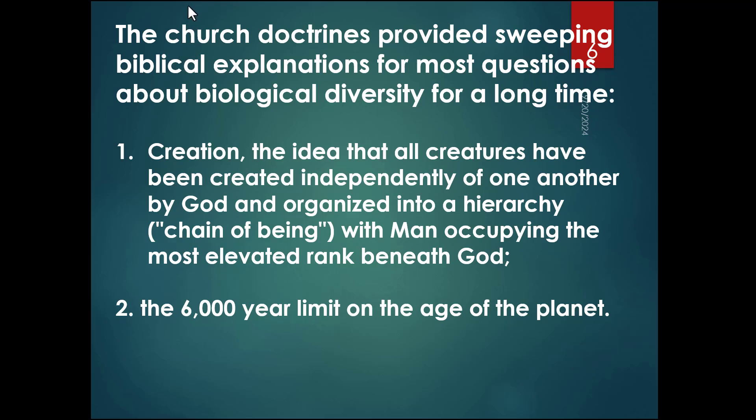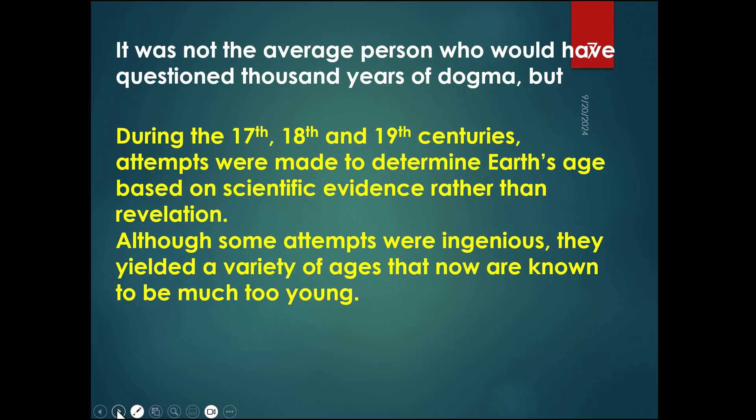His calculation provided a sweeping biblical explanation for most questions about biological diversity for hundreds of years. First of all, the creation — the idea that all creatures have been created independently of one another by God and organized into a hierarchy, a chain of being, with man right under God. The other thing which really shut down every kind of thinking was the 6,000-year limit of the age of the Earth. During the 17th, 18th, and 19th centuries, some people tried to calculate the age of the Earth scientifically, not just from the Bible. Although some attempts were ingenious, they yielded ages that we now know are much younger than reality.